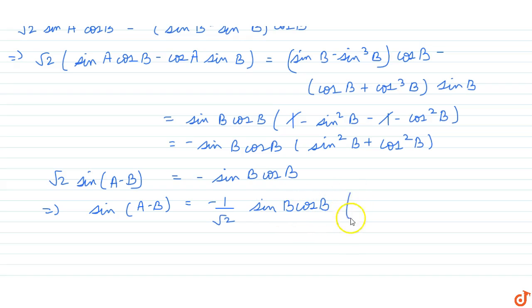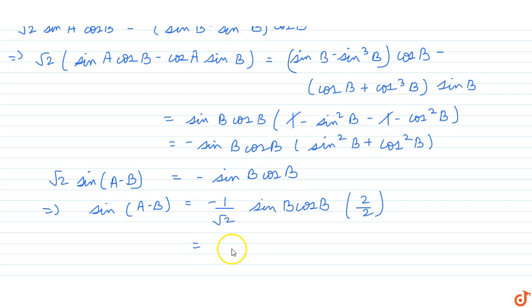Now multiply and divide this expression by 2. In the numerator we get 2·sin b·cos b, and 2·sin b·cos b equals sin(2b). So we get sin(a − b) = −(1/(2√2))·sin(2b).